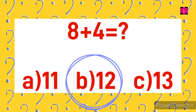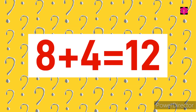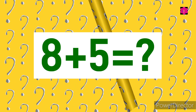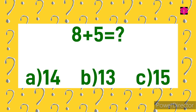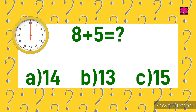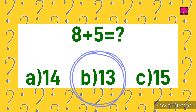Yes, the correct answer is B) 12. 8 plus 4 is equal to 12. Your next sum is 8 plus 5 is equal to? Your options are A) 14, B) 13, and C) 14. Your time starts now.